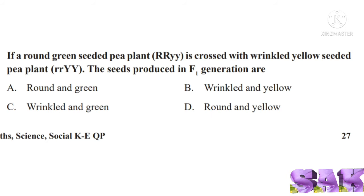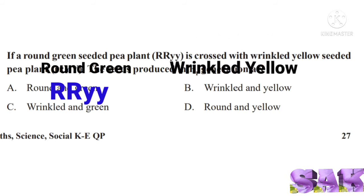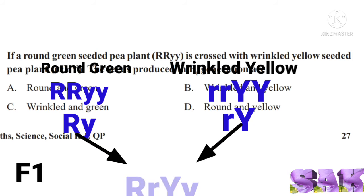Parent plants given here are round green represented by RRyy, and wrinkled yellow plant represented by rrYY. Gametes produced by these plants: Ry and rY. Gametes of F1 plant produced by the hybridization of these two plants is RrYy.